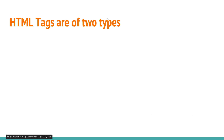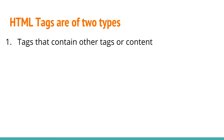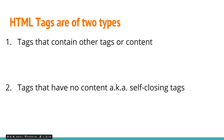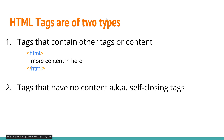HTML tags are of two types: tags that contain other tags or content, and tags that don't have any content, also known as self-closing tags. For tags that contain content, we write the opening tag — for example, lesser sign, HTML, greater sign — and then the closing tag, which is the same but with a forward slash before the tag name: lesser sign, slash, HTML, greater sign. We can put content inside between them.